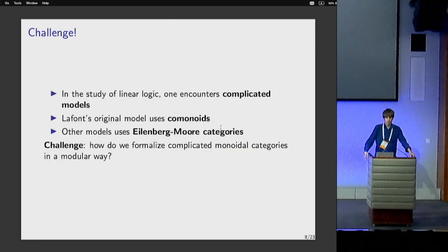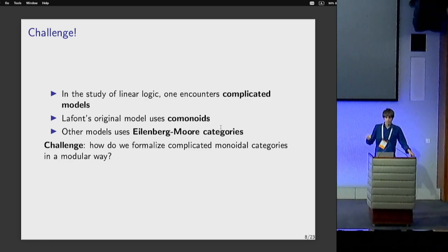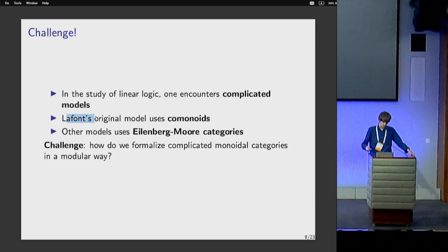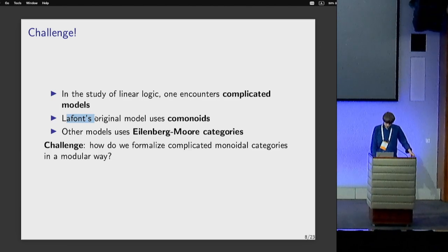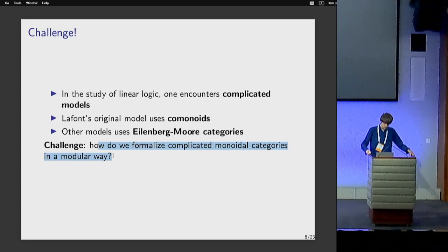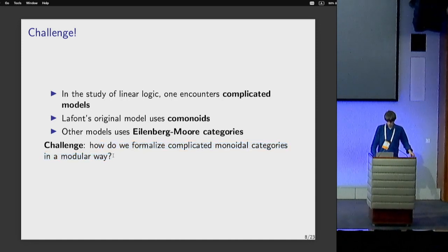What we were interested in was how to construct complicated or actual models of linear logic. Many people have considered a wide variety of different models varying in complexity. One standard model arises from comonoids — this was by LaFont. People also look at Eilenberg-Moore categories of a comonad, and many more. The question we were interested in is: how can we construct these categories or models in a nice, modular way?